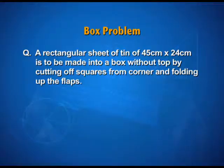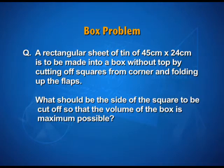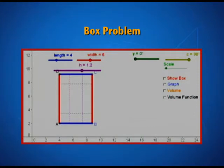The statement says: a rectangular sheet of tin of 45 cm by 24 cm is to be made into a box without a top by cutting off squares from the corners and folding up the flaps. What should be the side of the square to be cut off so that the volume of the box is maximum possible? You can always try this with paper — take a rectangular sheet and cut off squares from the four corners. You will realize the side of the square can vary, and when you fold up the flaps, you get boxes of different volumes. We want to find the box with maximum volume.